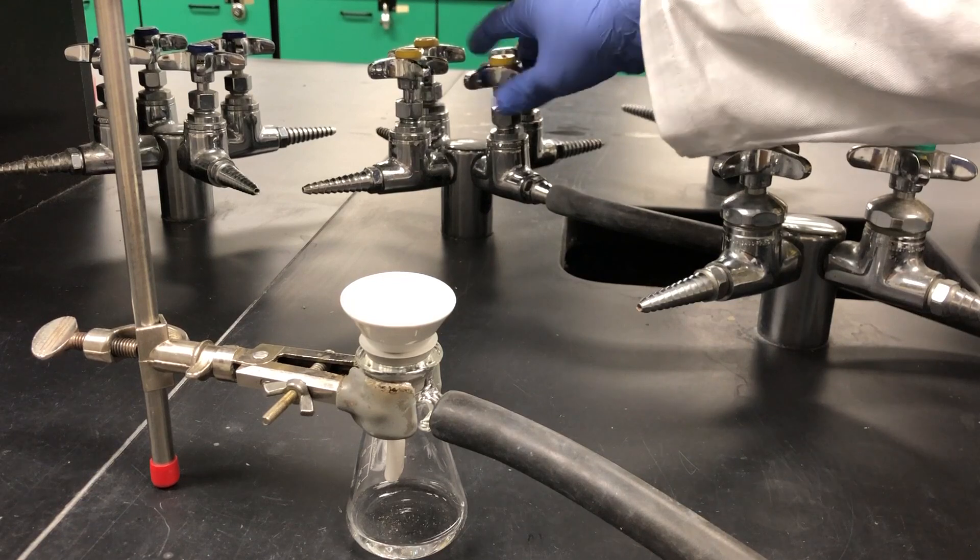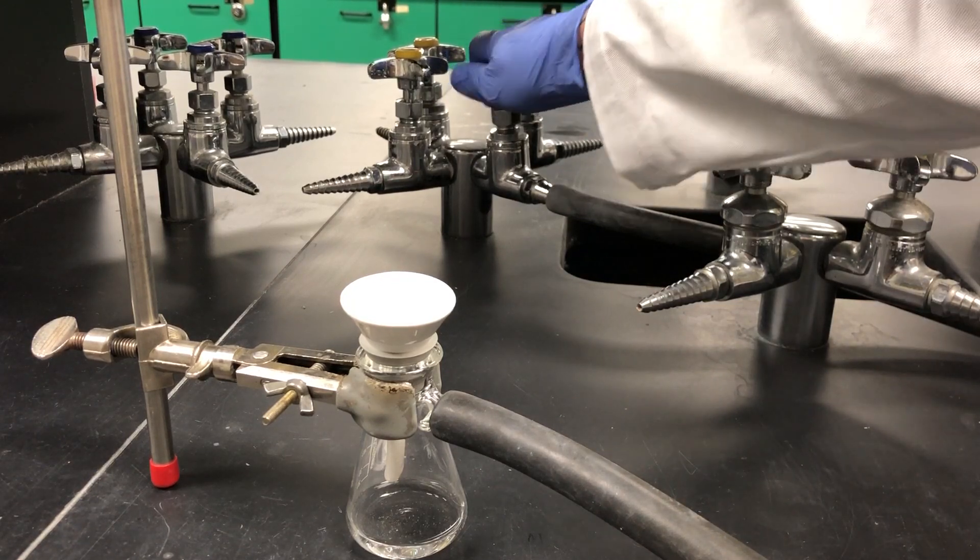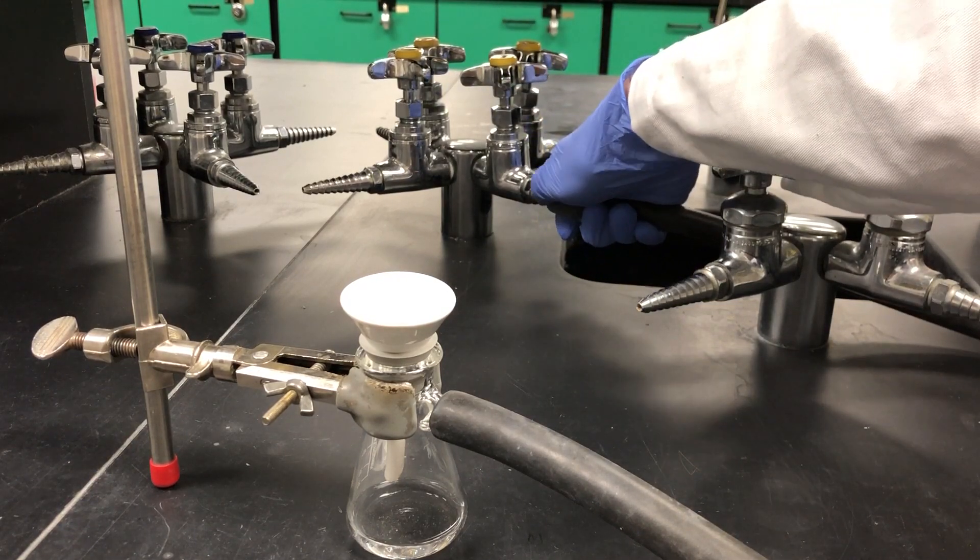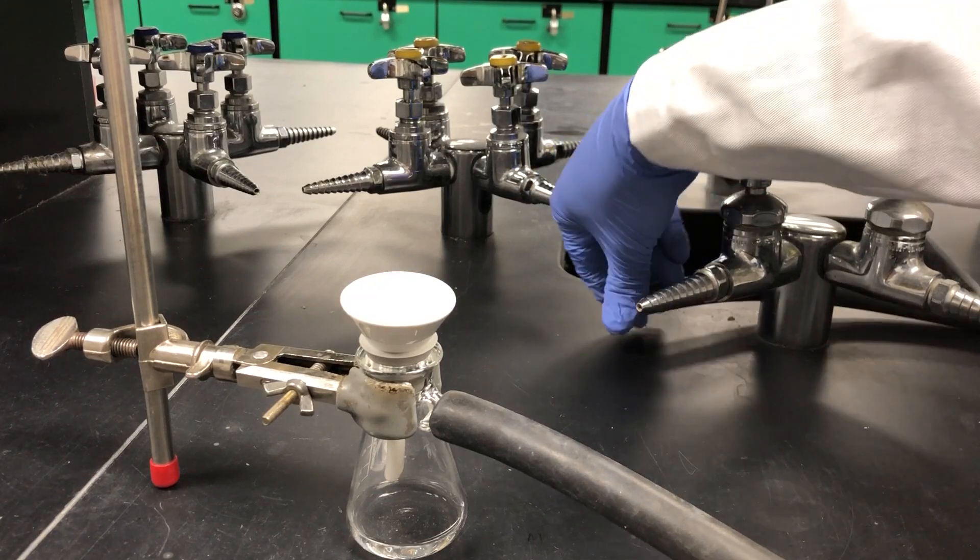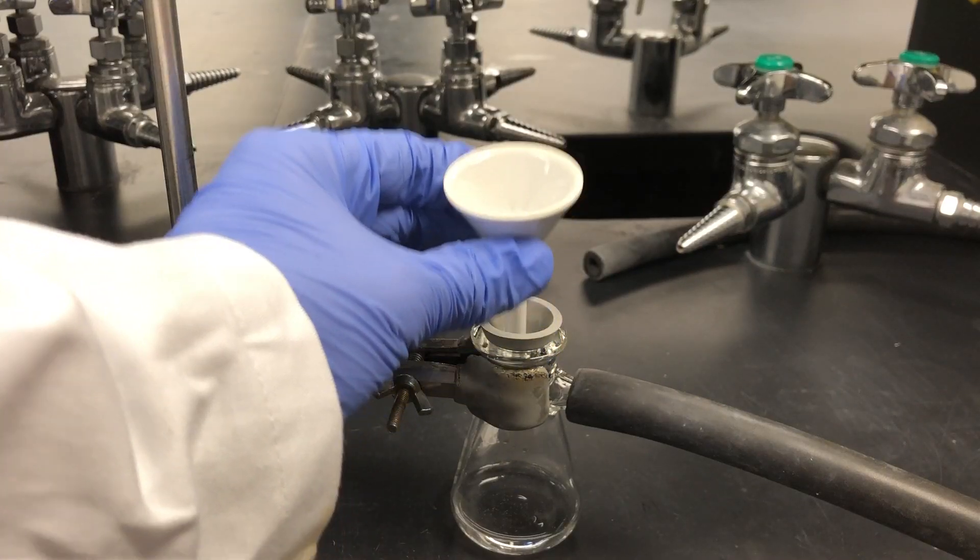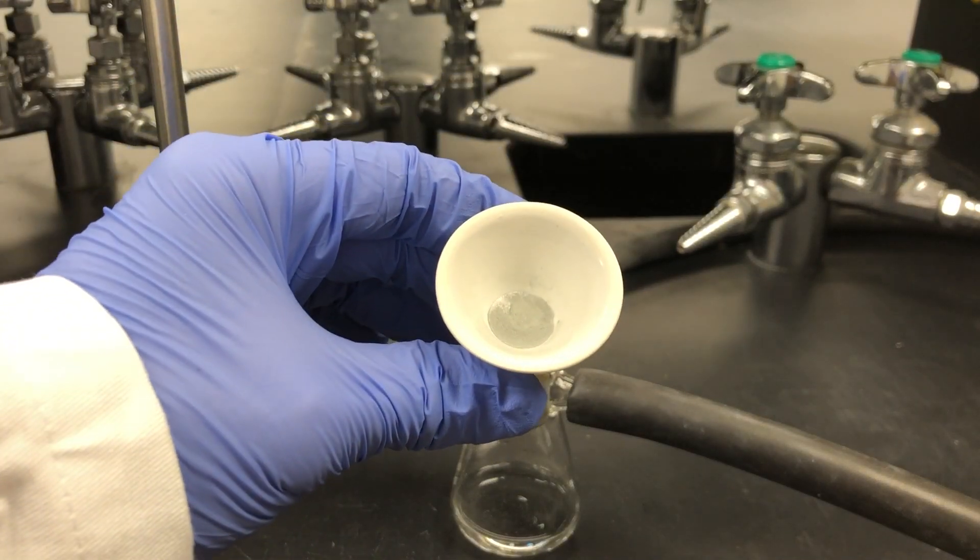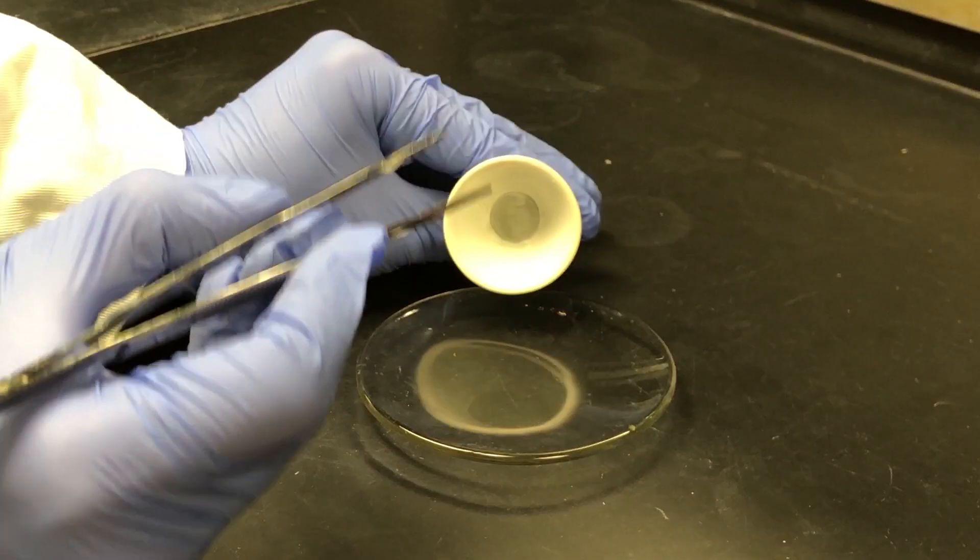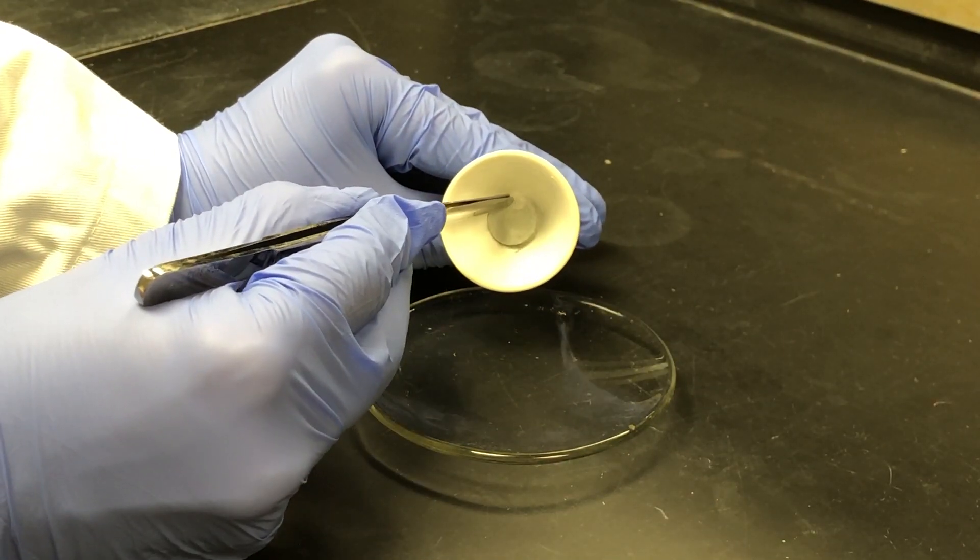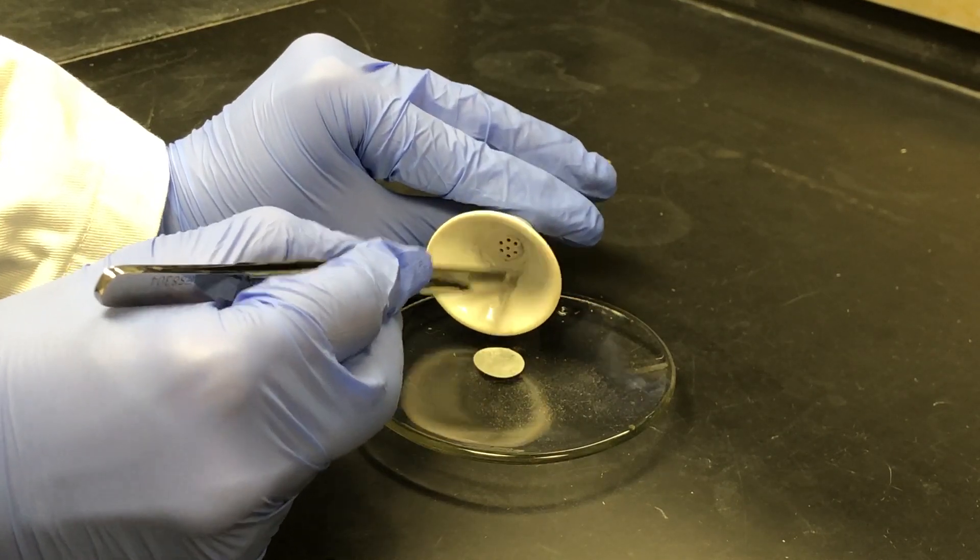Once your filtrate has completely drained into the filter flask, turn off the vacuum tap and remove the tubing from the tap. To remove your sample, take the Hirsch funnel off of the filter flask, and then use forceps to slide the filter paper onto a clean, dry watch glass.